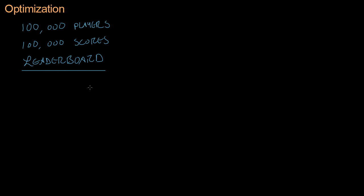Everybody will be able to see what position they are according to their score, and they can fight for the highest position on the leaderboard. So we need to make an algorithm that will take all 100,000 players and sort them by who has the highest score. A hundred thousand is a lot of players, so we want efficient, optimized code.